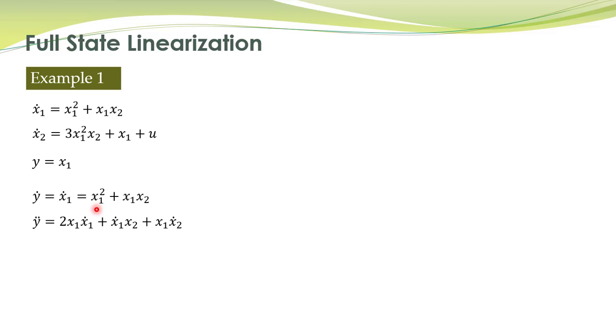The second derivative of this thing can be easily computed. It is given here. If we substitute x1 dot from here and x2 dot from here, you see that the control input will appear here. Therefore, relative degree is equal to 2.